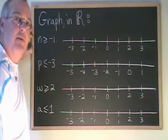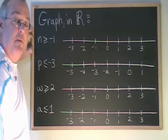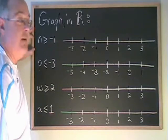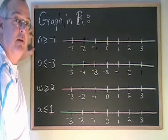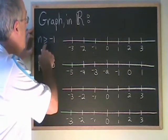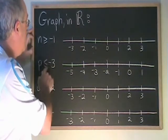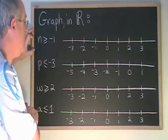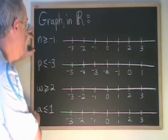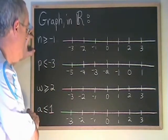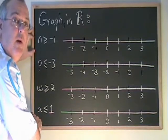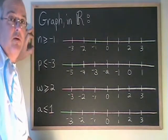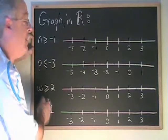When we graph in real numbers, there are some important differences compared to graphing in natural numbers or integers. Let's look at these examples: N greater than or equal to negative 1, P less than or equal to negative 3, W greater than or equal to 2, and A less than or equal to 1. All four of these examples have the or equal to line underneath the symbol.